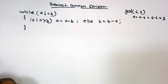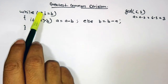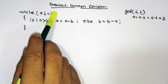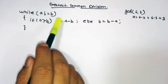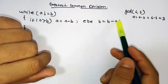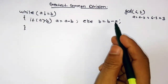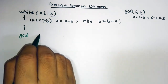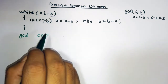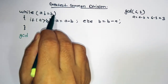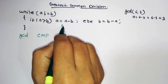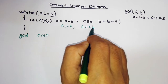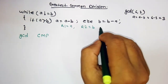Now let's convert it into ARM assembly code. We will compare a and b, then check: if a is greater than b, subtract; otherwise subtract a from b. Let's start with the label 'GCD'. First, compare a with b. Here we assume a is stored in R1 and b is stored in R2.